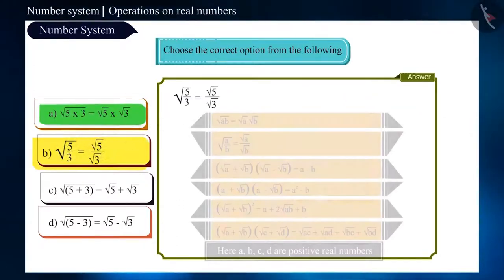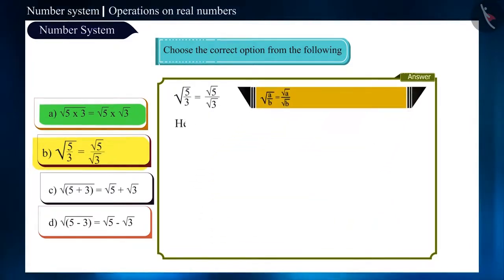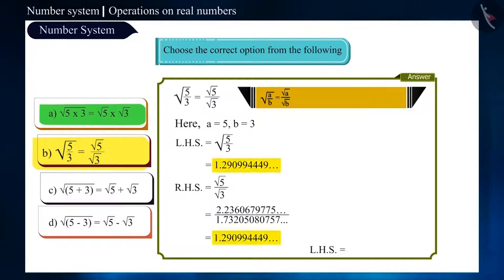Now, look at option B. Here, we will use this rule: root of A by B is equal to root of A by root of B. Here, A is equal to 5 and B is equal to 3. Let us find the value of root of 5 by 3 and the root of 5 by root of 3. The values of both are equal, so this option is also correct.